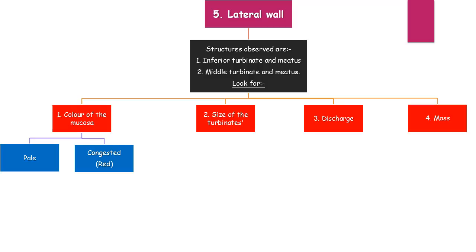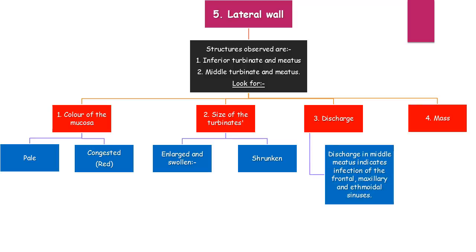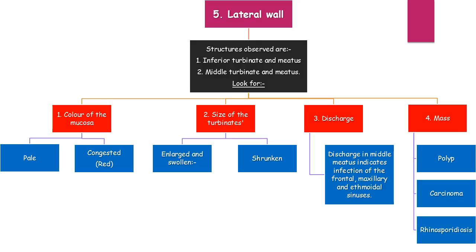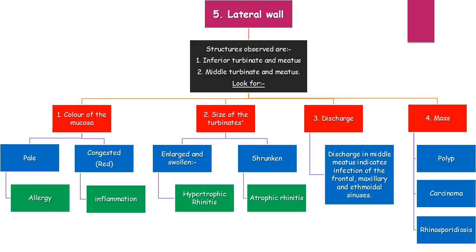Different pathologies of mucosa color: the mucosa can be pale or red/congested. Three sizes of turbinates: normal, swollen, or atrophied. Discharge is usually not present in the meatuses — discharge in the middle meatus indicates infection of the frontal, maxillary, and ethmoidal sinuses. Possible masses in the lateral wall are polyp, rhinosporidiosis, and carcinoma. Pale mucosa indicates allergy; congested mucosa indicates inflammation; enlarged turbinates indicate hypertrophic rhinitis; shrunken turbinates indicate atrophic rhinitis.